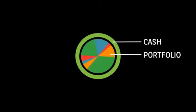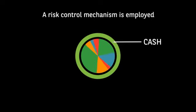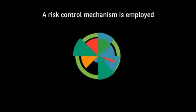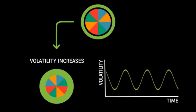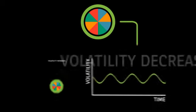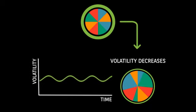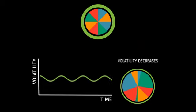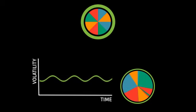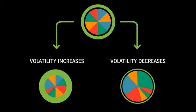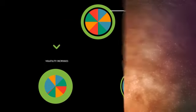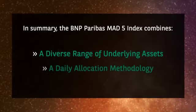In an effort to manage the volatility of the chosen hypothetical portfolio against further market volatility and large drawdowns, a risk control mechanism is employed. On a daily basis, the hypothetical portfolio targets an annualised realised volatility of 5%. If the realised volatility of the selected hypothetical portfolio exceeds the 5% target rate on any day, the index will reduce the weight of the portfolio and rebalance it with a cash component.